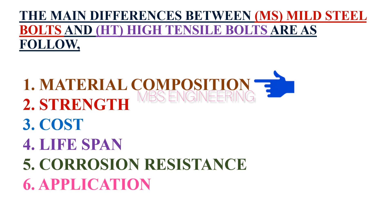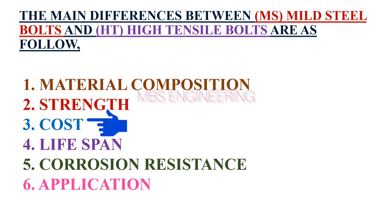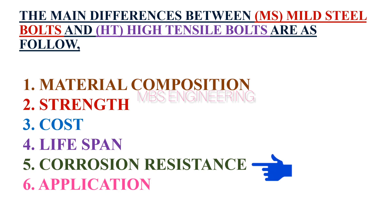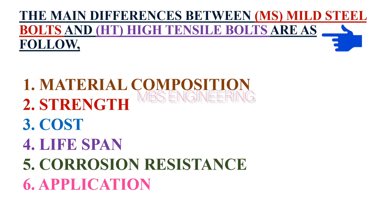The first point is material composition. The second point is the strength of the materials. The third point is the cost. The fourth point is lifespan. The fifth point is corrosion resistance. The sixth point is application. We will understand the detailed differences between these two types of bolts in the upcoming slides.